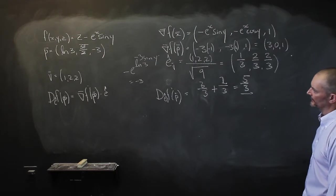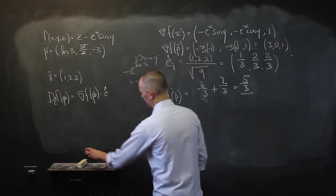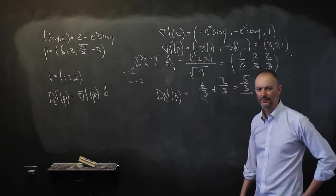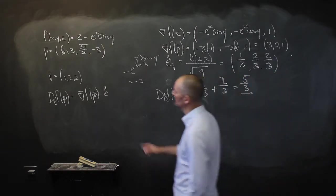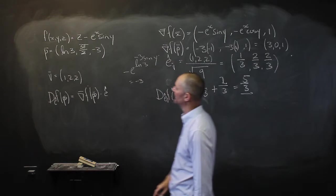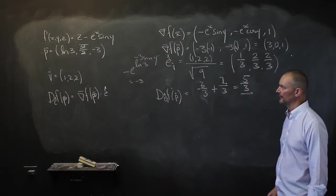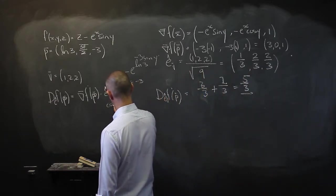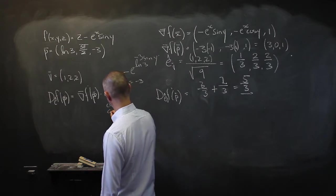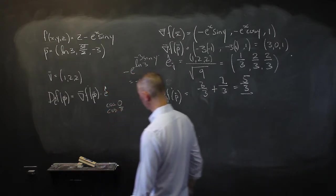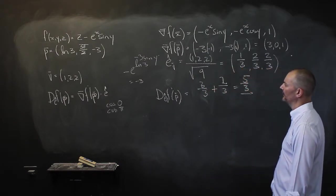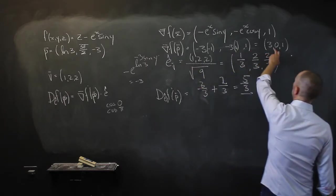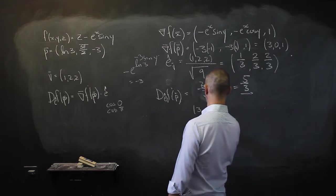Now the next question you might get is: in what direction at that point will we get the maximum rate of change, and in what direction will we get the minimum? The maximum corresponds to a cosine of 0, and the minimum to a cosine of π or 180 degrees. Let's look at what the gradient is at the point: it's (3, 0, 1).